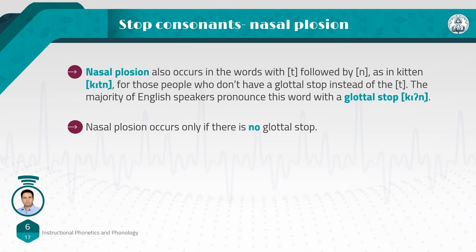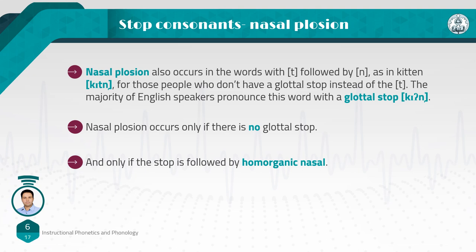Another condition for nasal plosion: the stop must be followed by a homo-organic nasal. In 'kitten,' /t/ and /n/ are both homo-organic — this is why we can have nasal plosion. So remember the two conditions: first, there is no glottal stop; and second, the stop is followed by a homo-organic nasal.